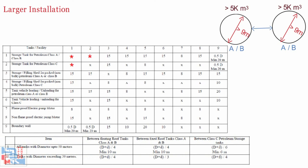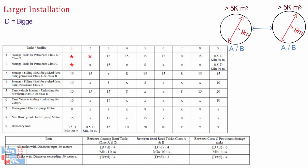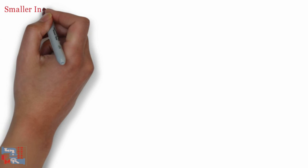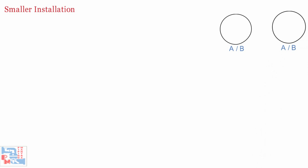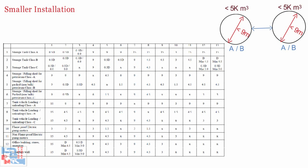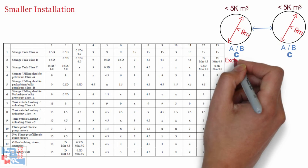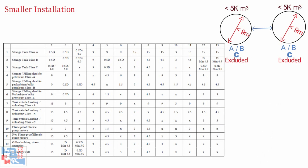Distances given in the tables are shell to shell within the same dike. In the table, X indicates suitable distances as per good engineering practices to meet construction, operational, and maintenance requirements. Where a star is marked, refer to the second table. For example, the separation distance between Class A or B floating roof tanks where the diameter is up to 50 meters should be D + d/4, or a minimum of 10 meters, where capital D is the bigger tank diameter and small d is the smaller tank diameter. These tables can be found in OISD 118. For smaller installations where total Class A and B storage capacity is less than 5,000 cubic meters and no tank exceeds 9 meters in diameter, a separate table applies for separation distances. This table also applies for Class C petroleum and excluded petroleum.